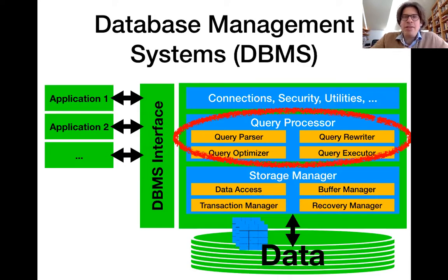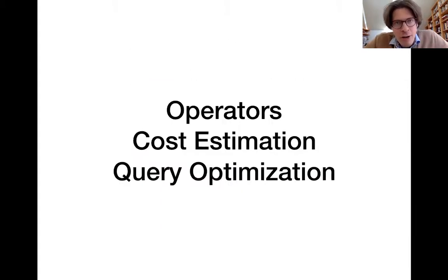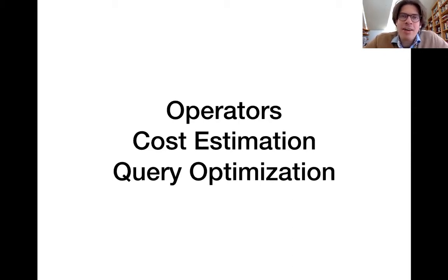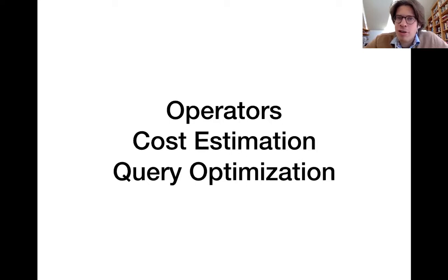Next, we're going to discuss about how we can process the data and derive new insights from it. We'll discuss standard operators, for instance operators for filtering data or for combining different data sources via so-called joins. We're going to discuss how to implement those operators and how to connect multiple operators in query processing plans. We're also going to discuss how we can estimate processing costs for operators and entire query plans before executing them, which allows us to choose the most efficient plan by a process called query optimization.